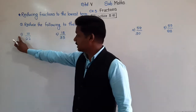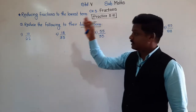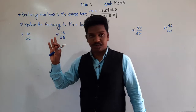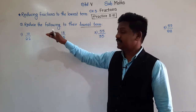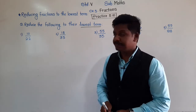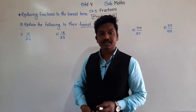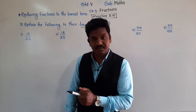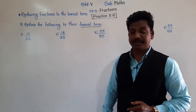See the first example in practice 5.10. The fraction given is 10 upon 22, and we have to find its lowest term — smallest term. That means we have to reduce it, and to reduce it we have to find a number by which we can divide both the numerator and denominator.